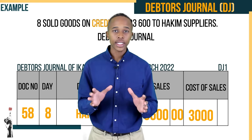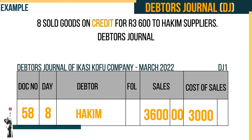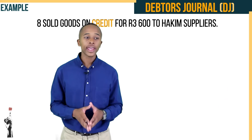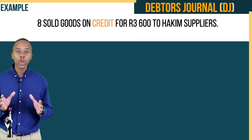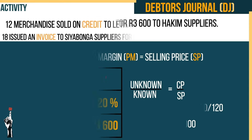Let's see if you can calculate the cost of sales column — the answer is R3,000. Don't worry if you haven't gotten it yet; let's do it together. It's unknown divided by the known: R3,600 × 100 ÷ 120 = R3,000.